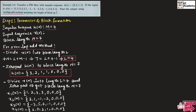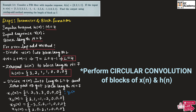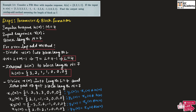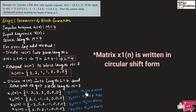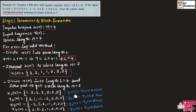Now corresponding to each block formed by x of n, we will find the individual convolution values. For x1 of n we will find y1 of n by taking the convolution of x1 of n with h of n. Similarly we will find y2 of n, y3 of n, and y4 of n by convolving x2, x3, and x4 with h of n respectively. To find the convolution we will use the matrix method, where the matrix x1 of n will be written in circular form and multiplied with h of n to find y1 of n.